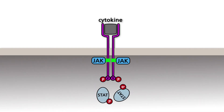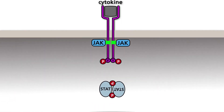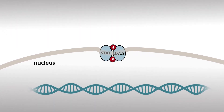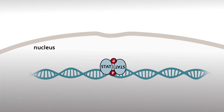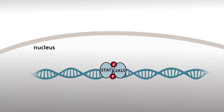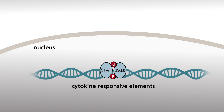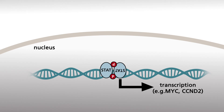Phosphorylated STATs enter the nucleus where they bind to specific promoter motifs of the DNA, known as cytokine-responsive elements, or CREs. DNA-bound STATs activate the transcription of many target genes, for example MYC and CCND2, which encodes cyclin D2.